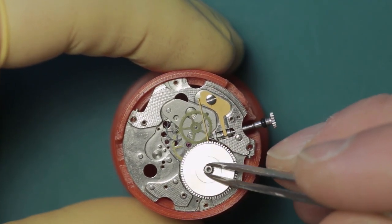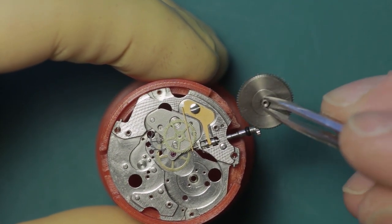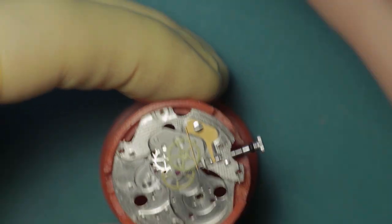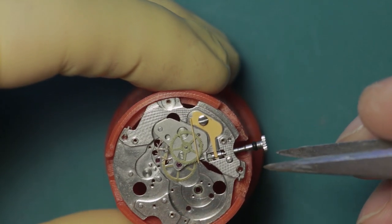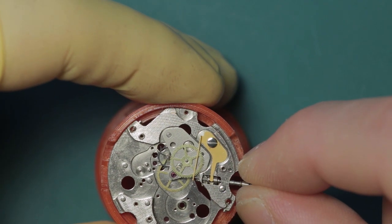I'm going to pop the fourth wheel, the center seconds, out. The mainspring barrel - get that out of the way. Very similar to a 6139 barrel. I will pop the spring out of that in a moment.